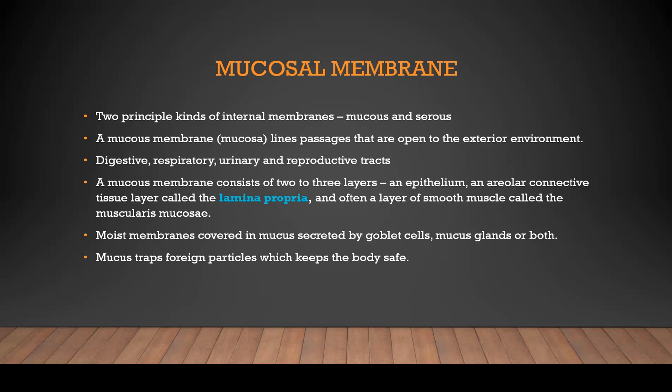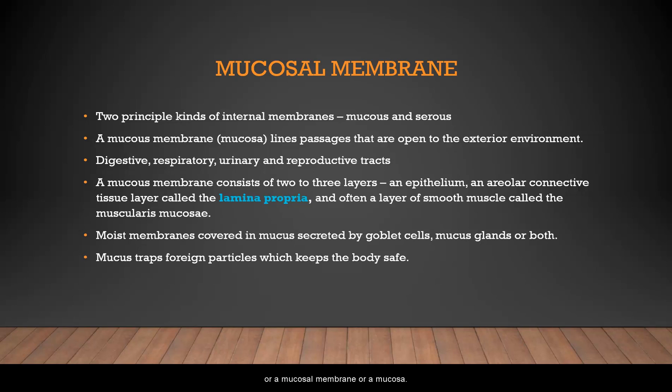Mucosal membranes — there are two principal kinds of internal membranes: mucous and serous. A mucous membrane, or mucosal membrane, or mucosa, lines the passages that are open to the exterior environment — things like your digestive, respiratory, urinary, and reproductive tracts.